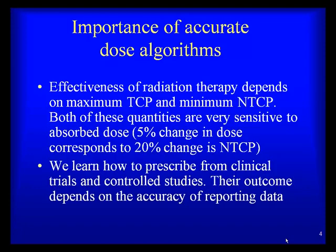Why is it important to have accurate dose calculation algorithms? The effectiveness of radiation therapy depends on maximizing tumor control probability and minimizing normal tissue complication probability. Both quantities are very sensitive to absorbed dose. We know from radiobiology that a 5% change in dose can correspond to as much as 20 or 25% change in normal tissue complication probability.